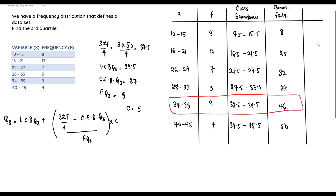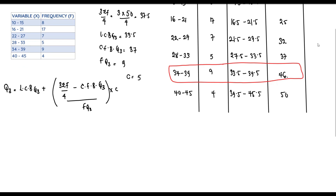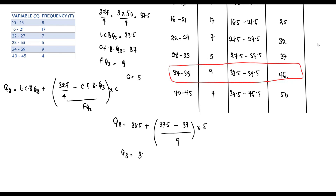Substituting all values into the formula: Q3 = 33.5 + ((37.5 − 37) / 9) × 5. Using a calculator for the bracket: 37.5 − 37 = 0.5, divided by 9 gives 0.0556.